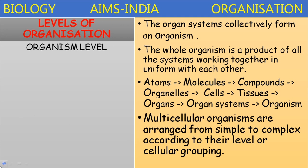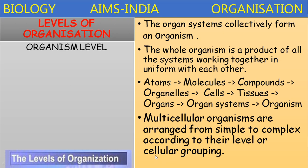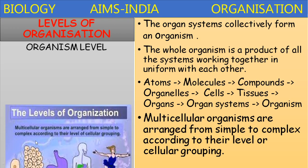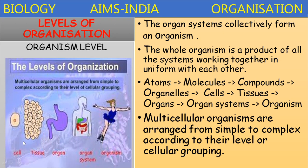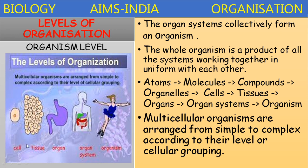In multicellular organisms, structures are arranged from simple to complex — from atoms to organism — according to their level or cellular grouping. Cells form the tissues, which form the organs, several organs form the organ system, and several organ systems form the organism.